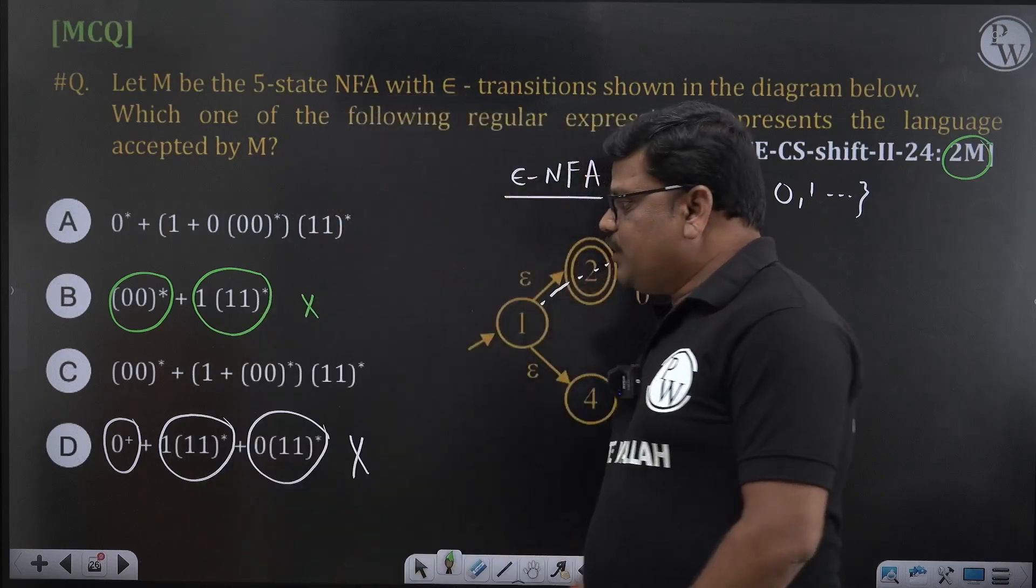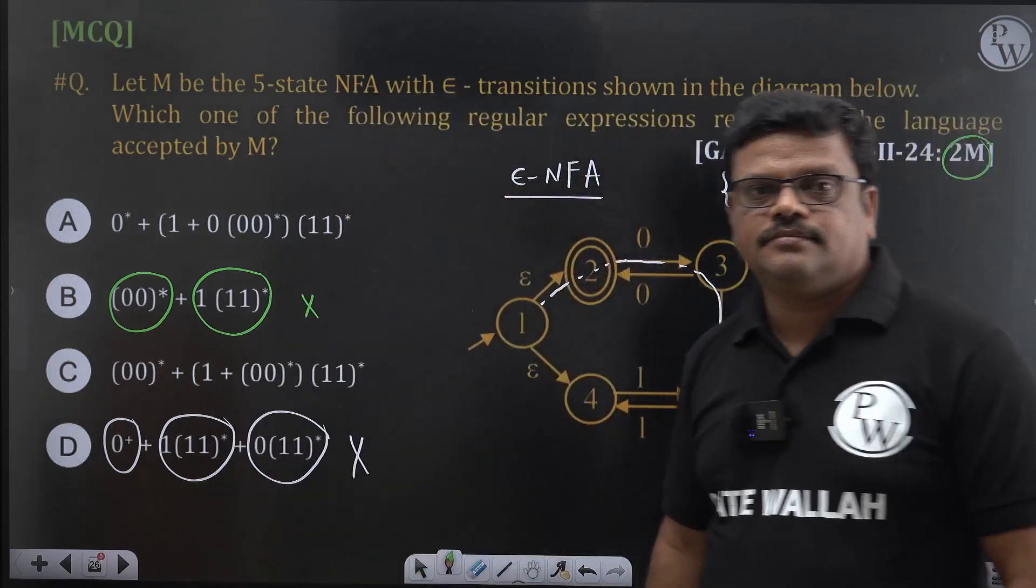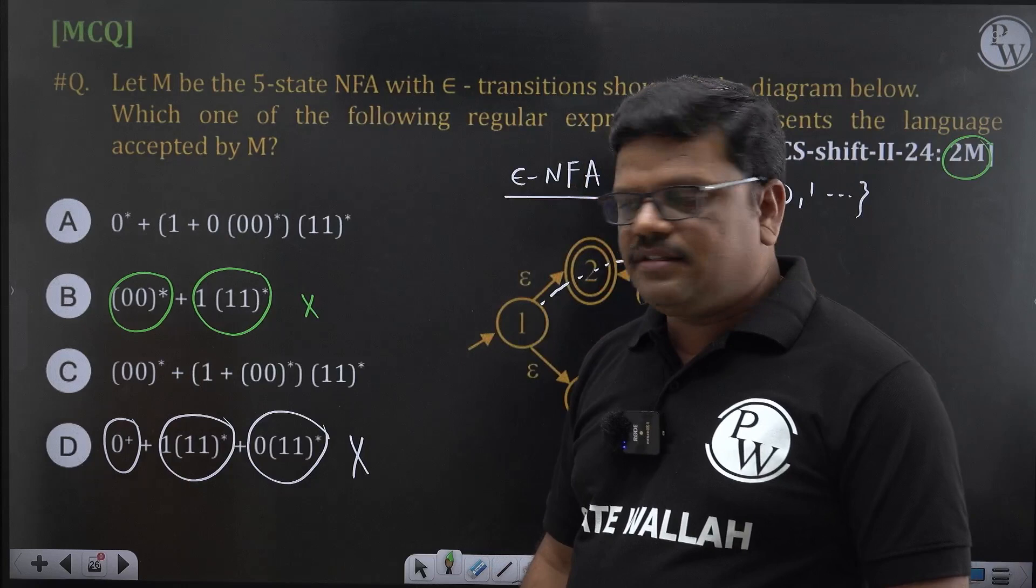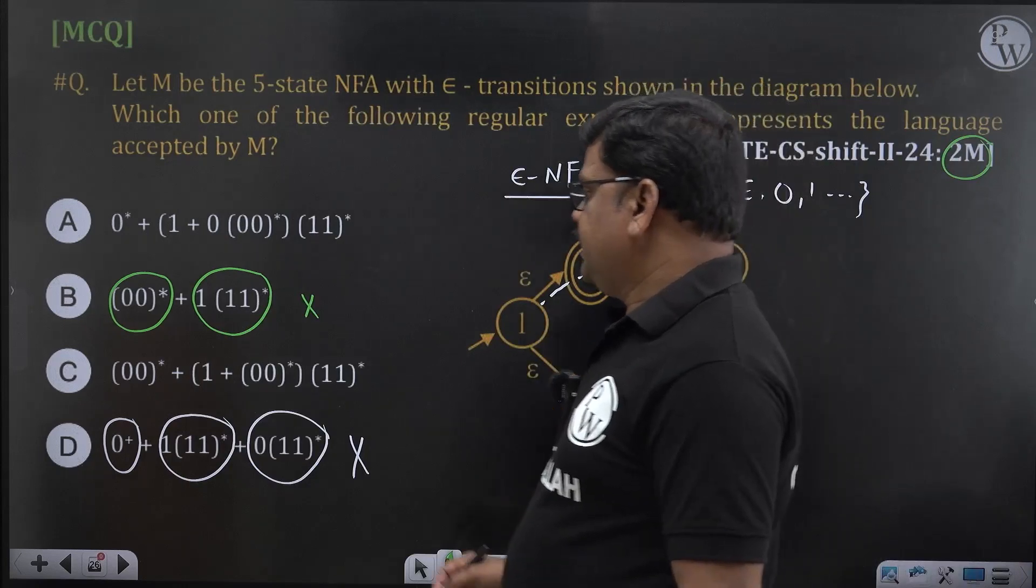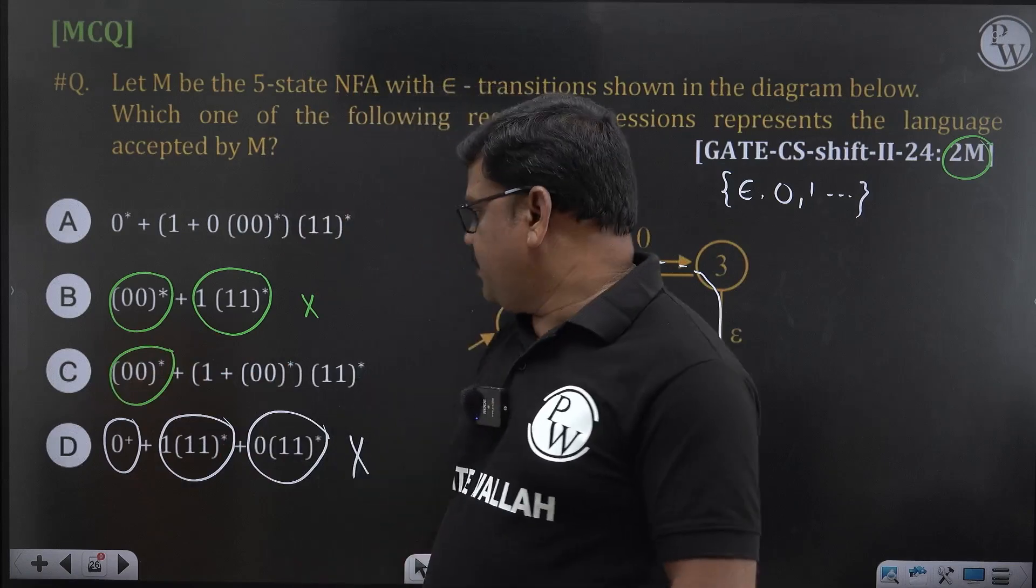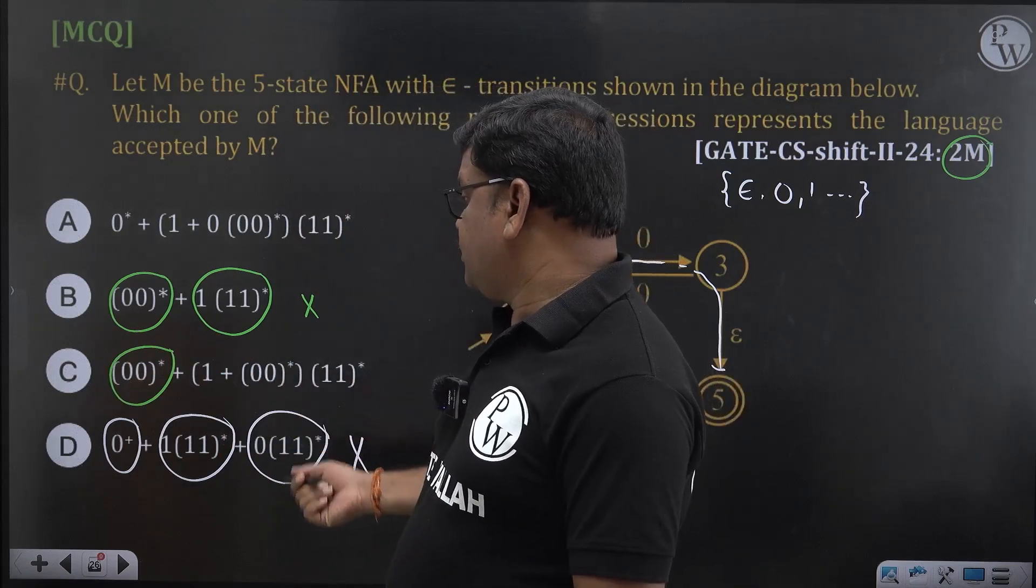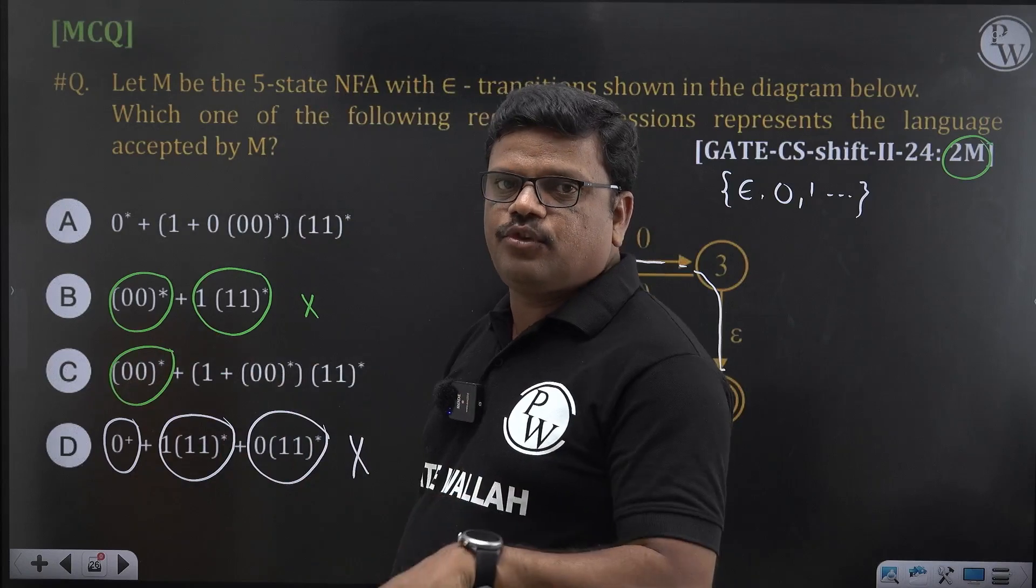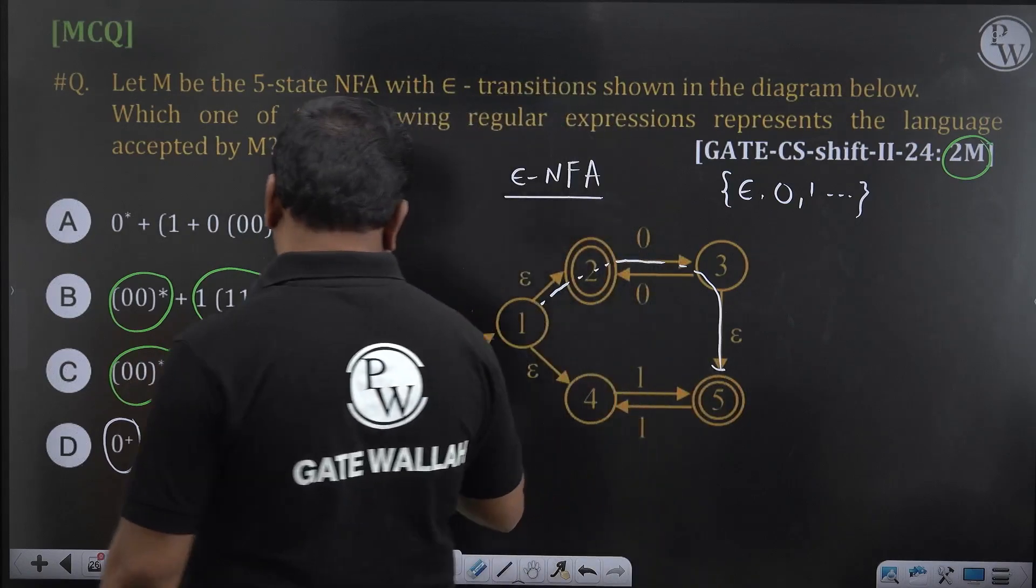Can we generate single 0 from option C? Here also, two 0s it is generating repeatedly, even number of 0s or from here also even number of 0s. Single 0 generation is not possible from option C as well, this is also gone.